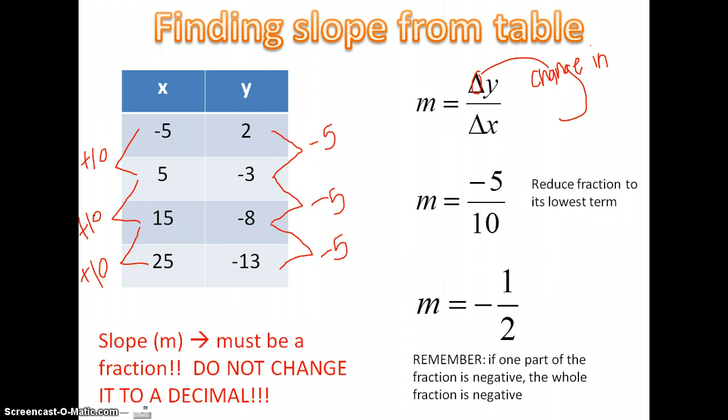And slope, which is your m, must be a fraction. Do not change into a decimal. Do not change it to a decimal. It must be a fraction. So our slope for the table is negative 1 half.